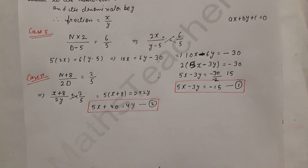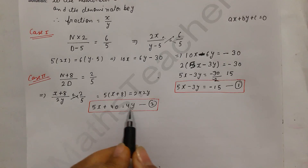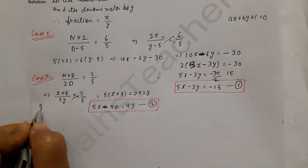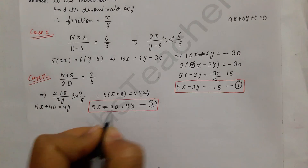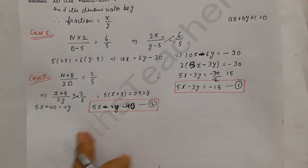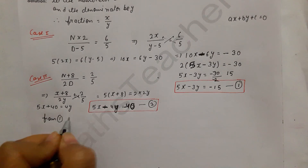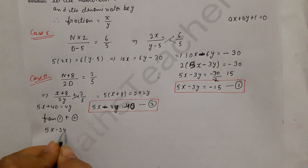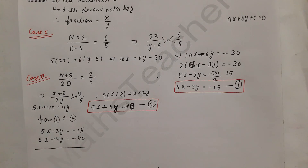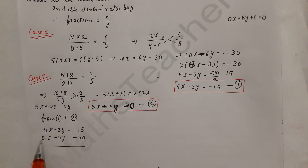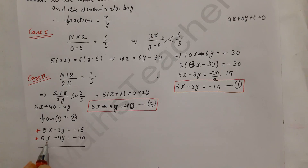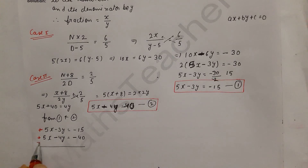Since both x coefficients are the same and both positive, we subtract one equation from the other to eliminate x. Equation one: 5x minus 3y equals minus 15. Equation two: 5x minus 4y equals minus 40. Subtracting equation two from equation one, 5x cancels out.